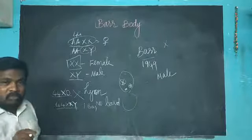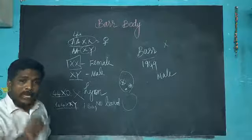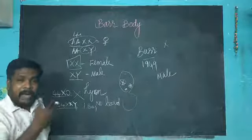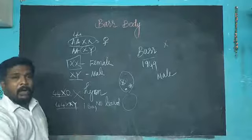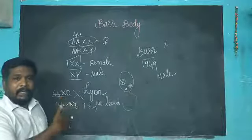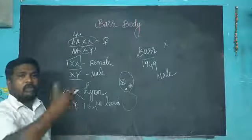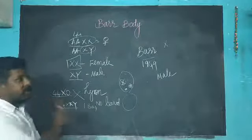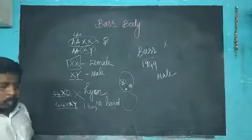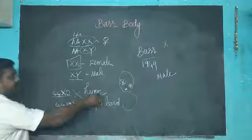One X chromosome will be activated. This is dosage compensation process explained by Lyon. This is the Barr body.